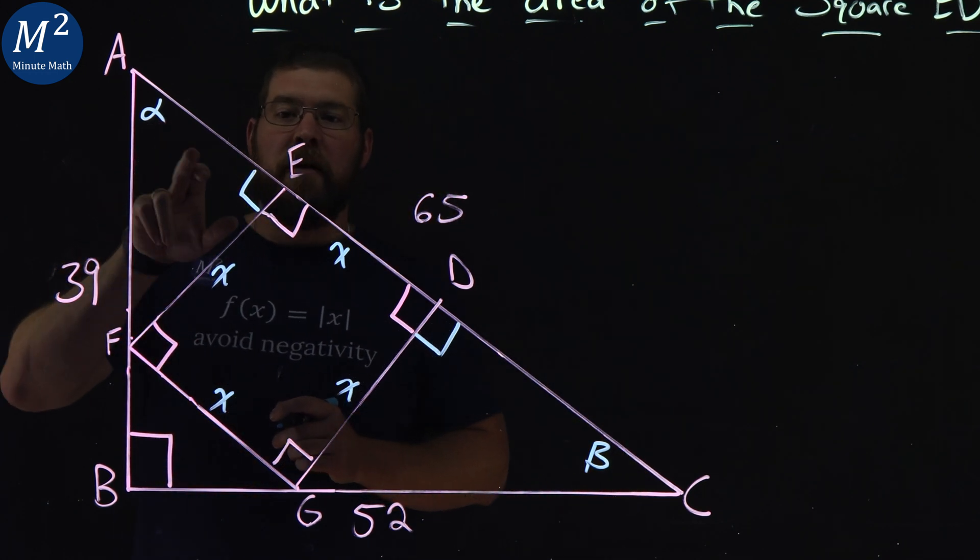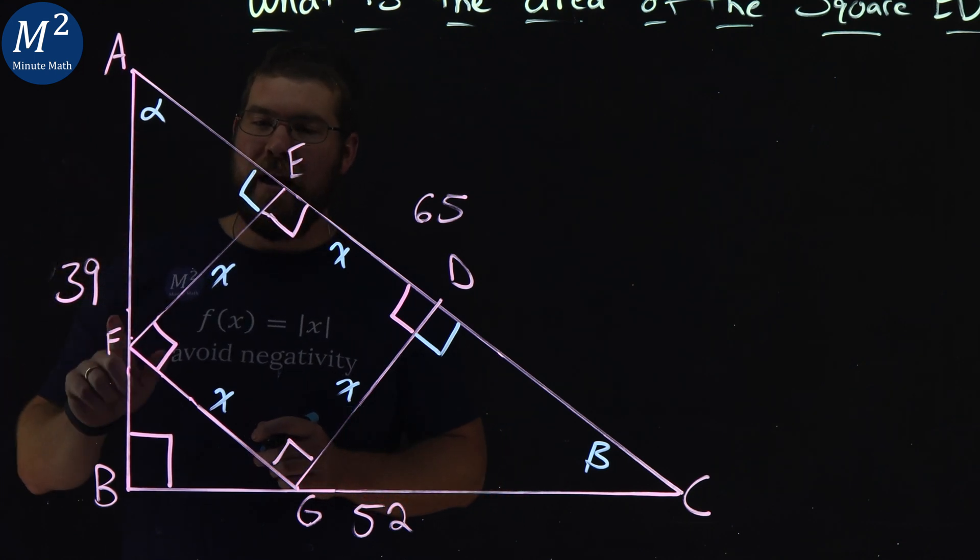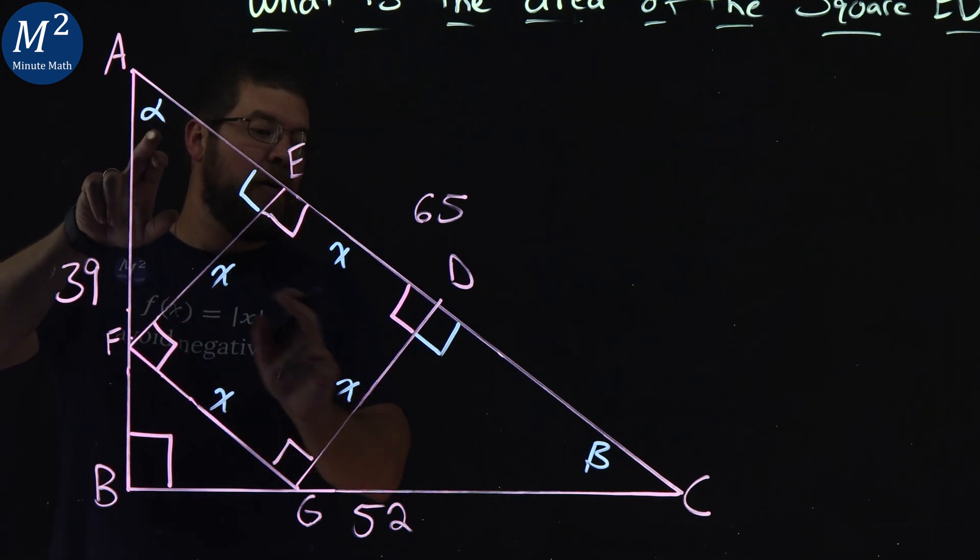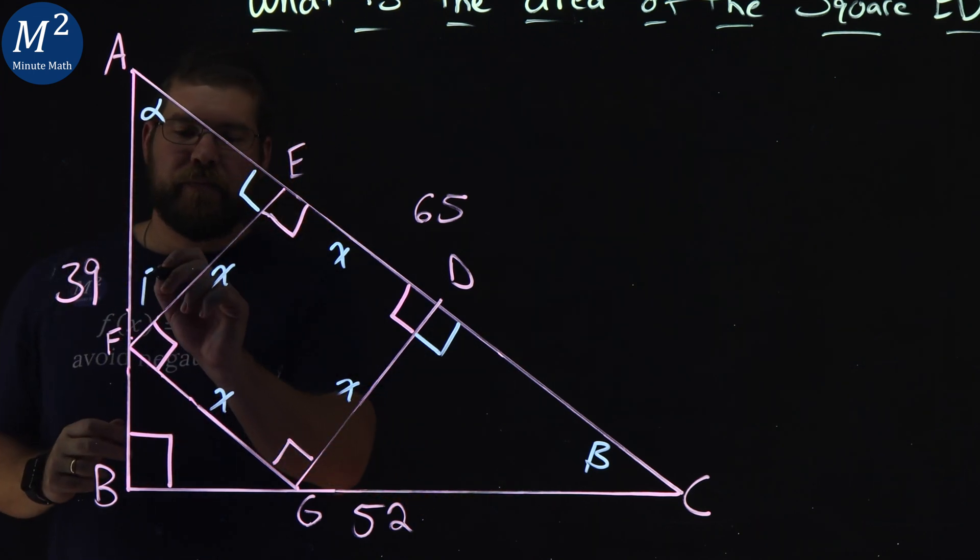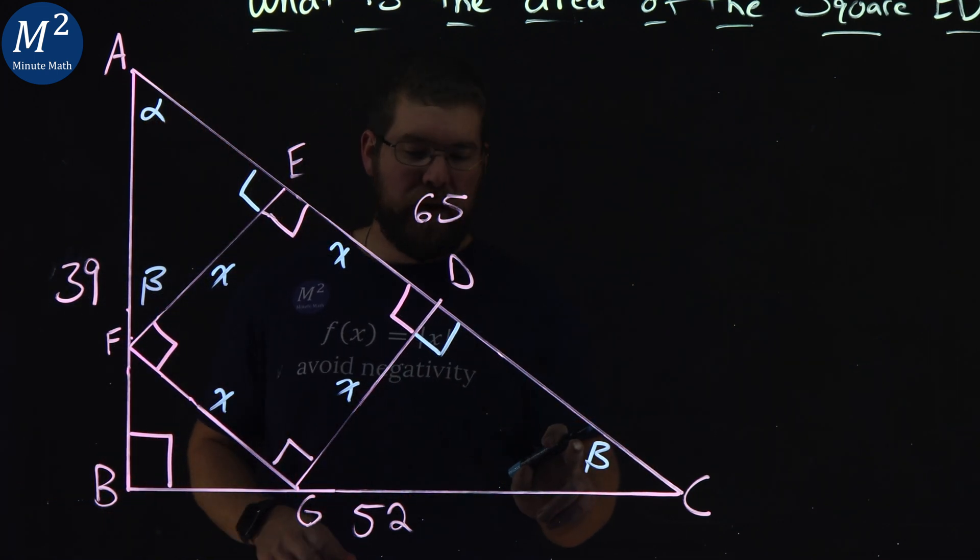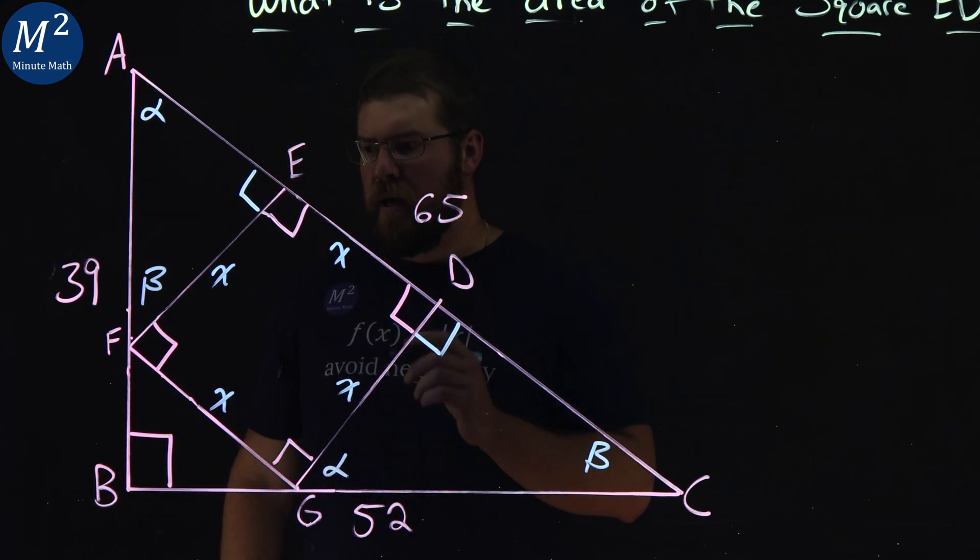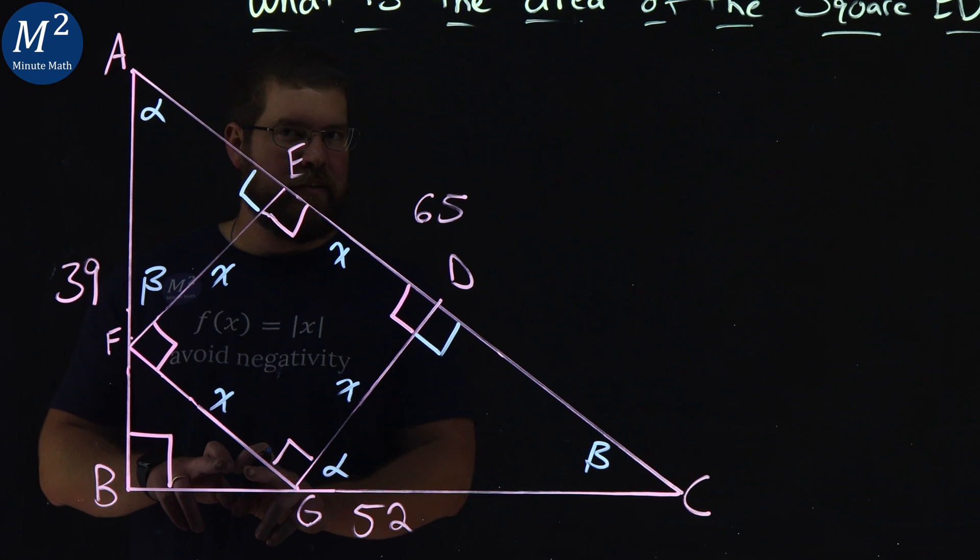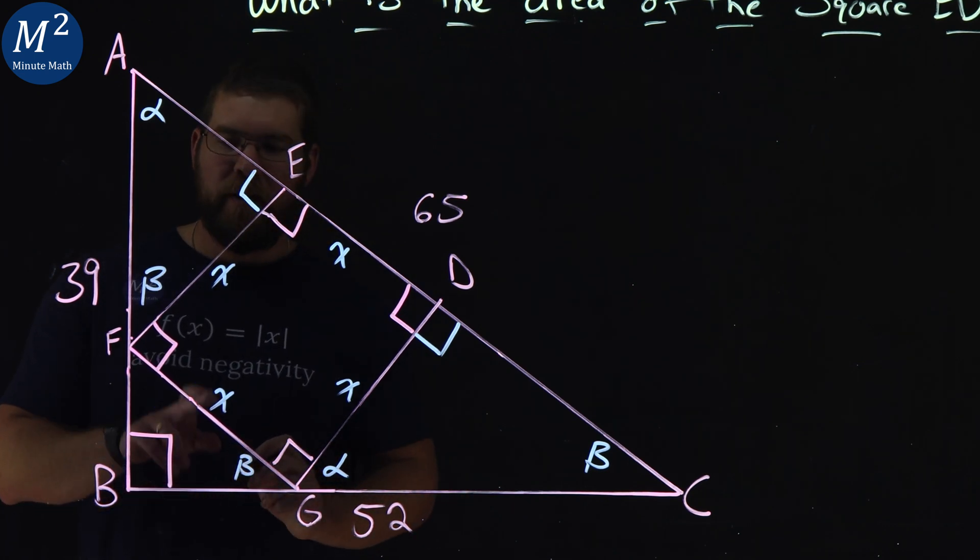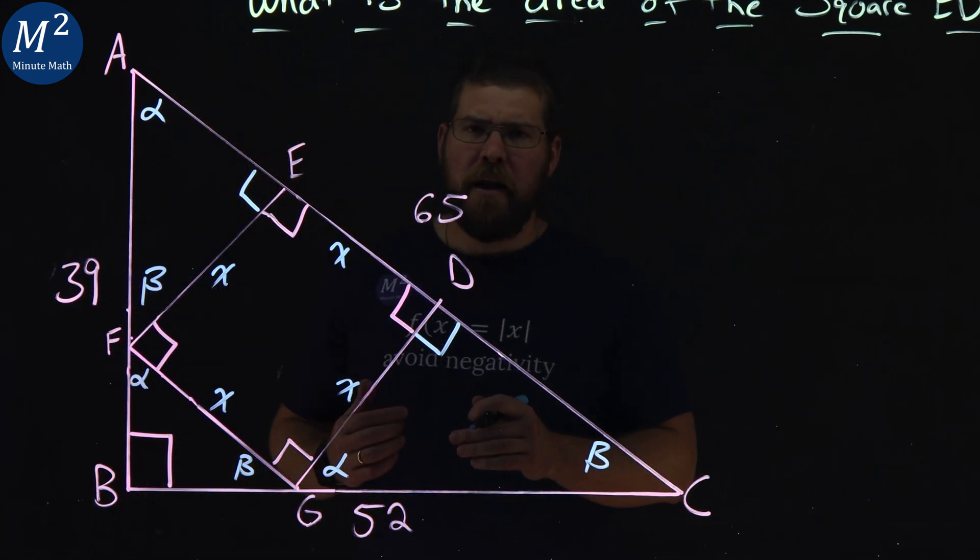Well, if this angle is alpha and this is 90 degrees, then this angle alpha and angle AFE also has to add up to be 90 degrees. Well, that must be beta then. And we can do this actual process a lot. Same thing, right angle, beta, this little angle here must be alpha. Same idea. Now on the inside, this is a little tricky. Alpha, 90 degrees, this must be beta. Beta, 90 degrees, this must be alpha.